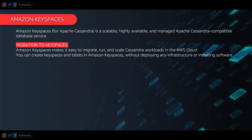Amazon Keyspaces makes it easy to migrate, run, and scale Cassandra workloads in the AWS cloud. If you've worked on Cassandra, you know we create keyspaces instead of databases — here as well you can create keyspaces and tables without worrying about deploying infrastructure or installing software. Given that you don't have to set up Cassandra clusters, manage nodes, handle consistency, or install drivers, using Amazon Keyspaces is clearly the easier path.